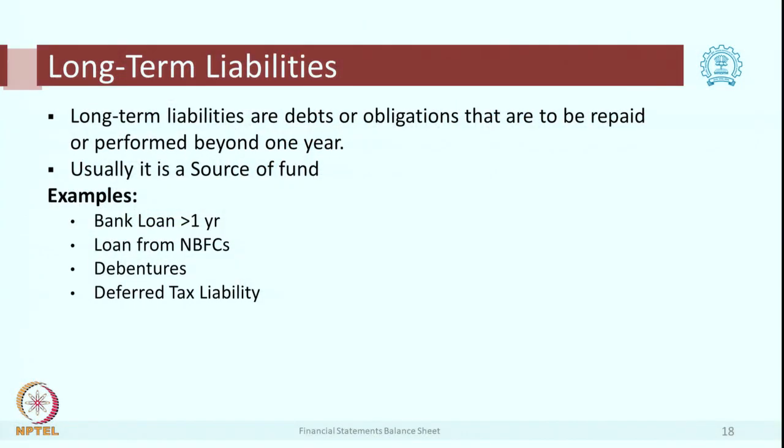Are there any other non-current liabilities? These are long-term or non-current liabilities — they are likely to be repaid or performed beyond 1 year. Usually they represent sources of funds, because that is how the company is raising its funds. One example is bank loan; it can also be a loan from NBFCs — non-banking financial companies. Other than banks, there are companies which give you a variety of loans, and that is also a non-current liability.